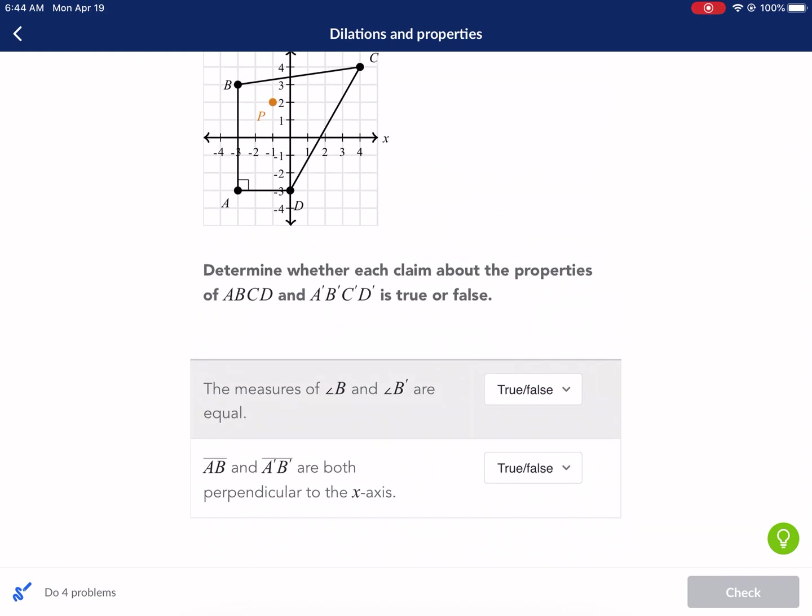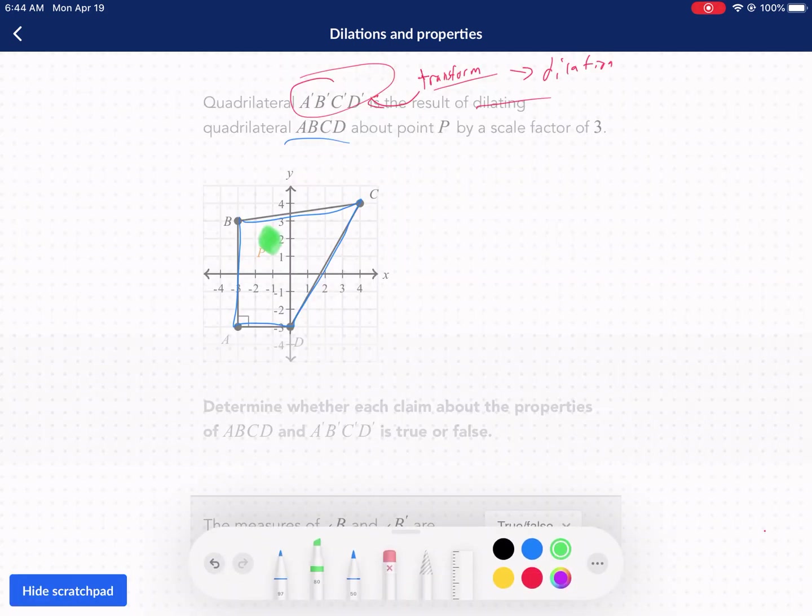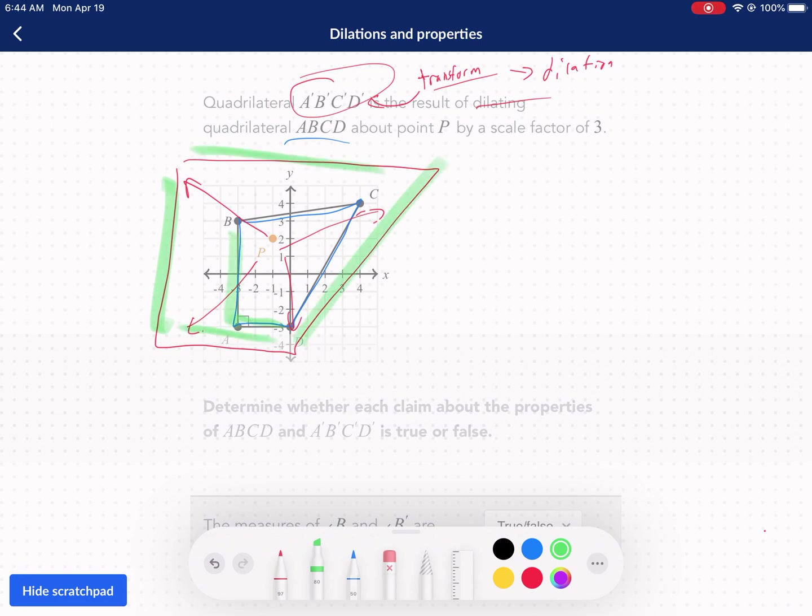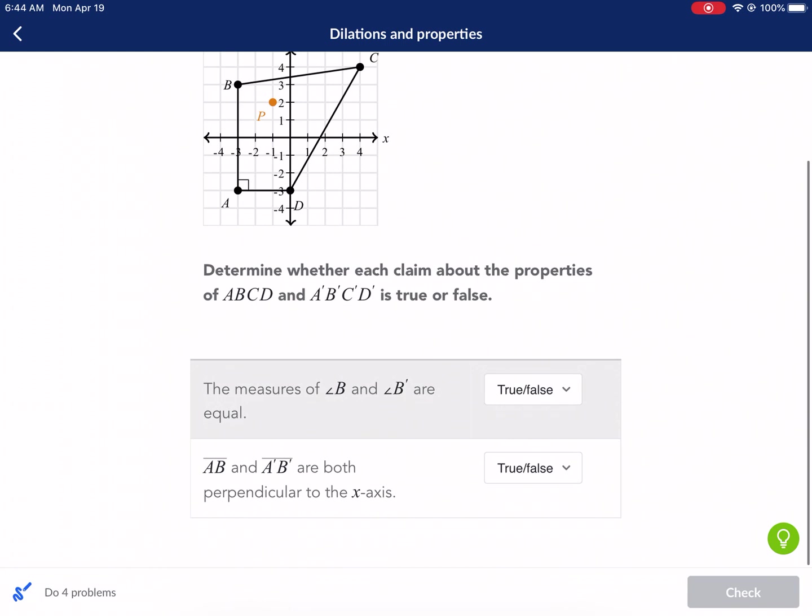The first claim: the measures of angle B and angle B prime are equal. As we have this shape here expand, it's going to expand about that point B in every direction. As it expands, the proportions of the sides are going to stay the same. So as we triple the size of the shape, the proportions stay the same, so the angles are also going to stay the same. So the angles are going to be equal.